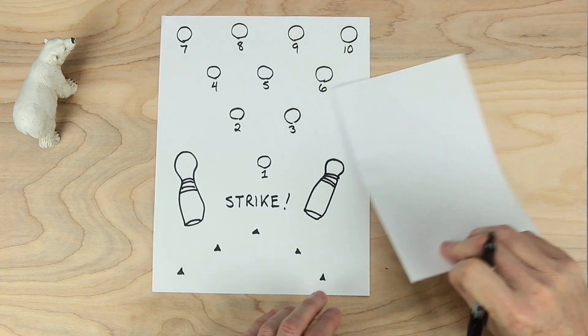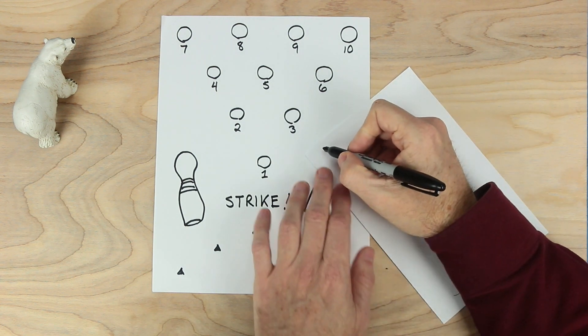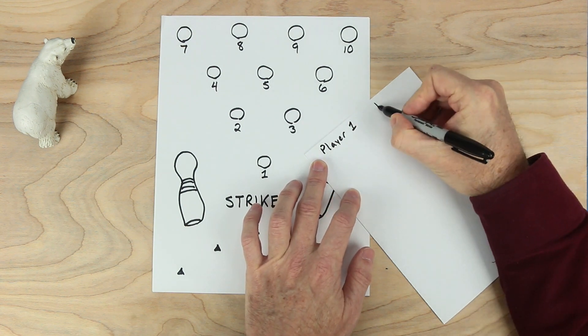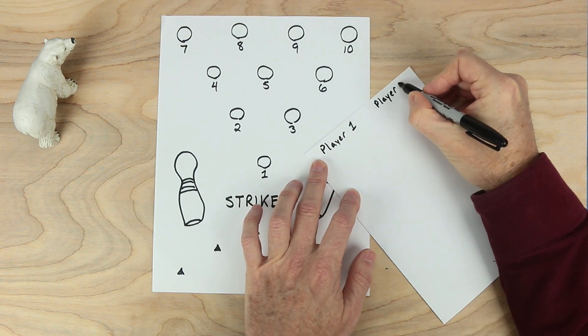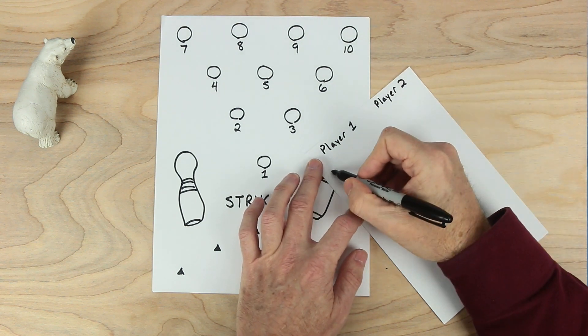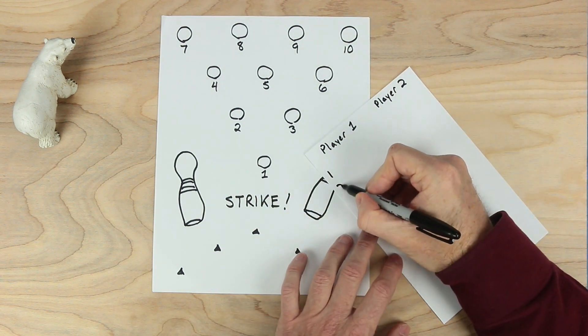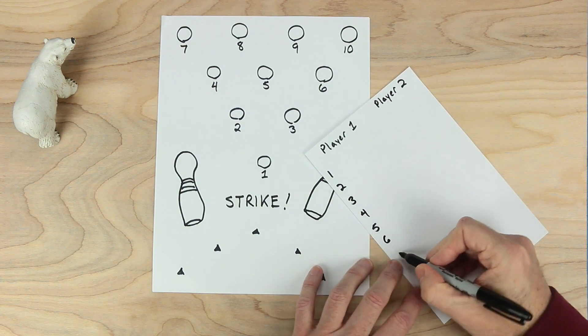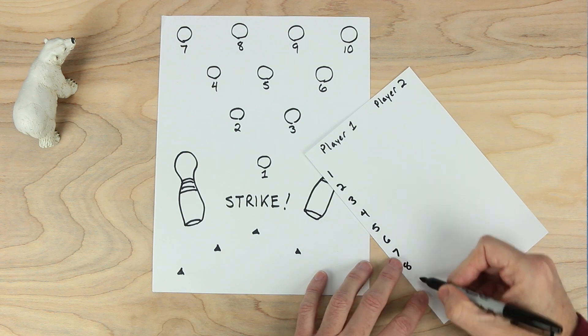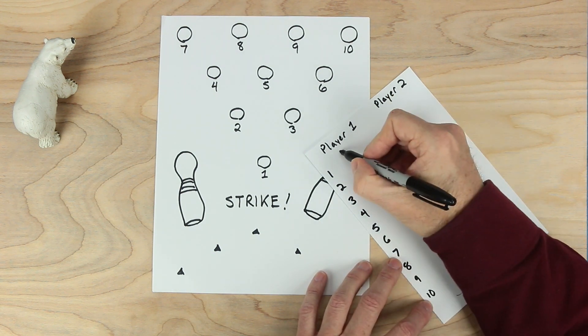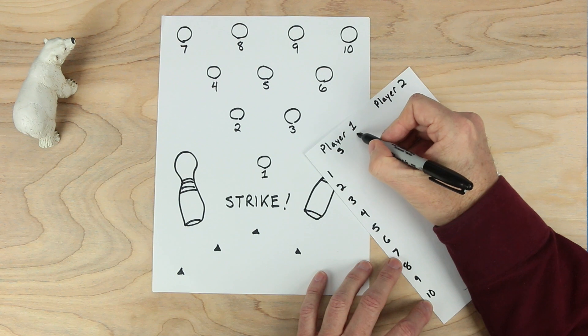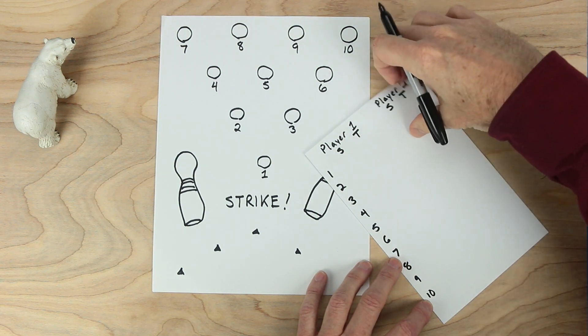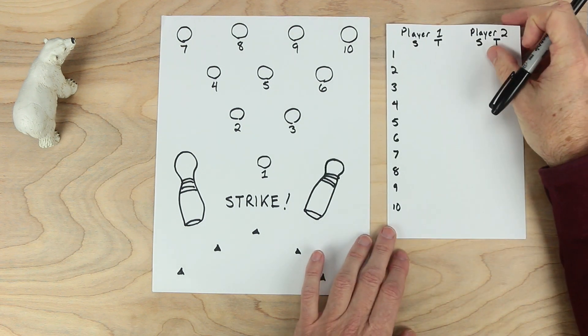We'll need a scoring sheet as well. On this, we'll have player one and player two. You could have more players, you'll need bigger paper though. And then you need to have numbers one through ten on the side here. Let's put the letter S for score and T for total up here. Now we've made all the game board parts.